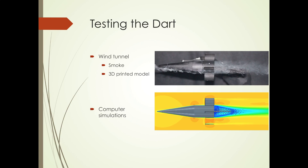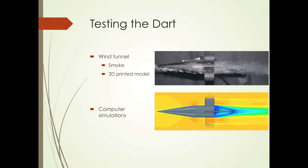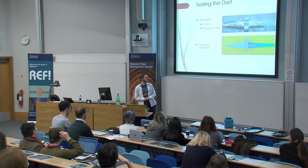I used a 3D printed full-scale model in the wind tunnel. The second method is by using computer simulations. In recent years, computers have become very powerful and they can accurately model complex fluid structures. As you can see in this picture, the top is the wind tunnel test and the bottom is an equivalent computer simulation test.